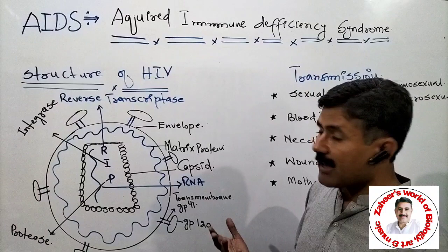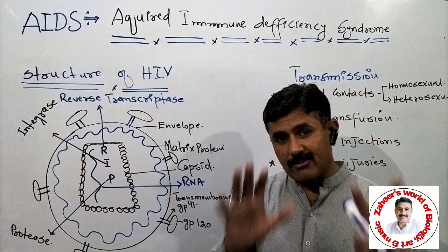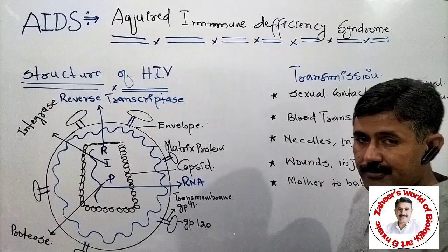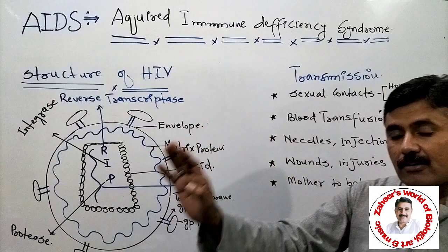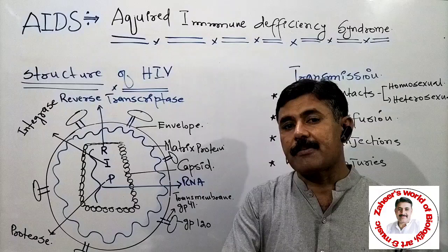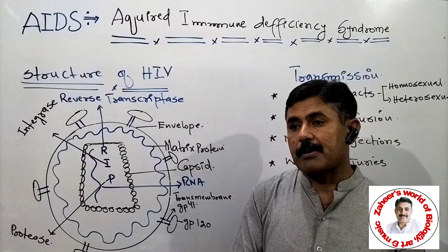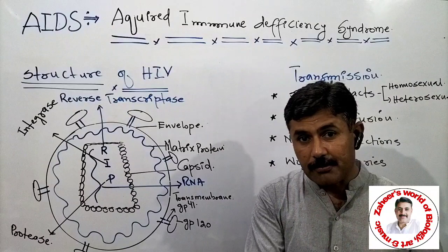We are going to study the whole process of AIDS one by one. First, we will study the structure of HIV in detail, then the transmission of AIDS, then how HIV mounts its attack on immune cells and what kind of immune cells it affects, then the mechanism of replication of HIV, and finally its treatment and preventions.